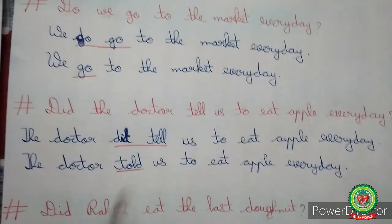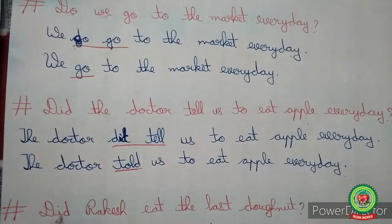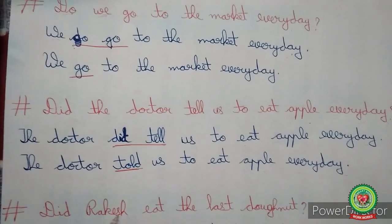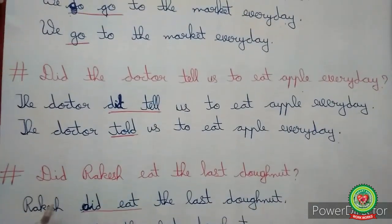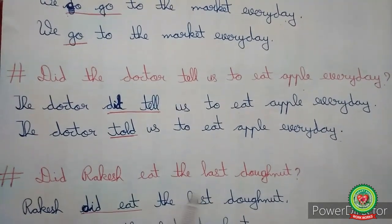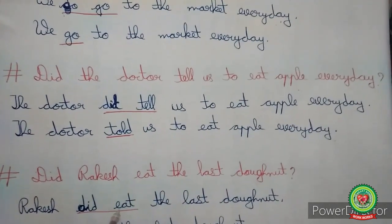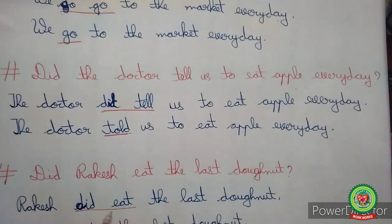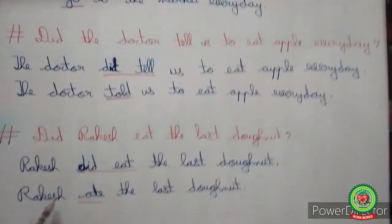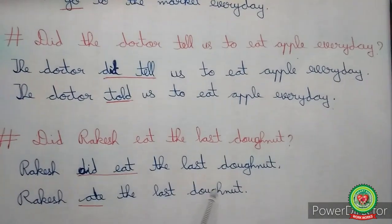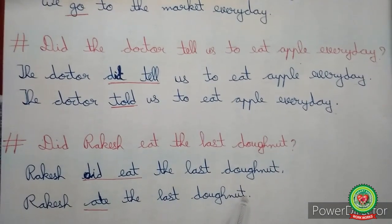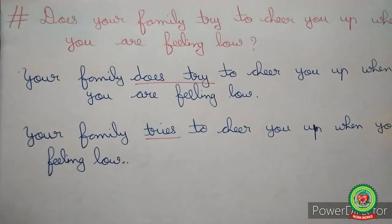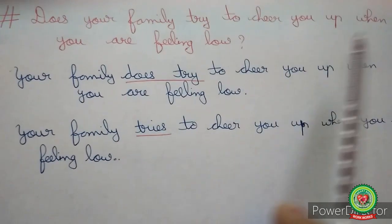'Did Rakesh eat the last donut?' Here 'did' is the helping verb. We place 'did' after the subject 'Rakesh,' giving 'Rakesh did eat the last donut.' In the simple statement, 'did eat' is changed to its past form 'ate,' so the sentence becomes: 'Rakesh ate the last donut,' with the question mark replaced by a full stop.